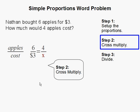Step two: To solve for X, we are going to first cross multiply. That means multiply diagonally—three times four gets us twelve, six times X gets us 6X, and we set them equal to each other.